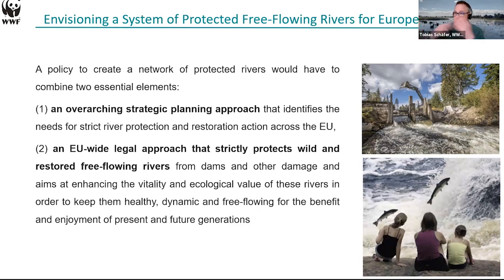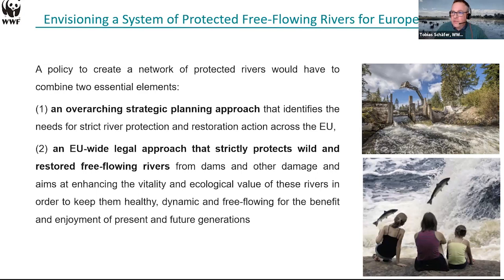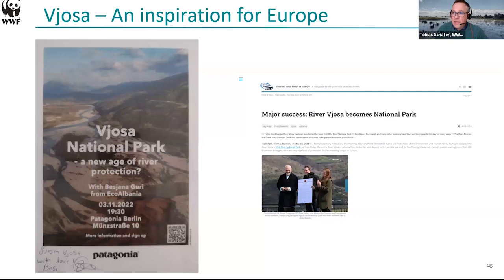How can we come up with a vision for a European network? How many rivers would we like to see protected, in which biogeographical setting, and how can we establish a mechanism that guarantees strict protection for the future? Those are the key questions to build a European network. An inspiration for Europe is Albania — the Vjosa became a wild river national park just a month ago, an incredible success of the powerful campaign 'Save the Blue Heart of Europe.' We should look at this more closely and see how we can transfer this idea to other rivers in Europe.